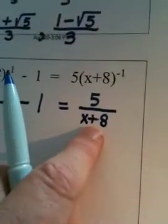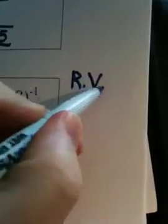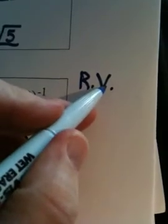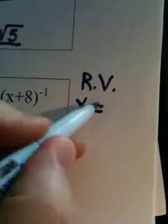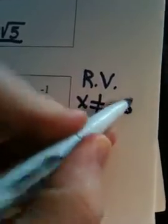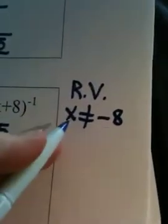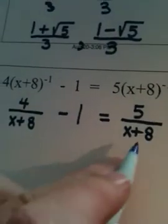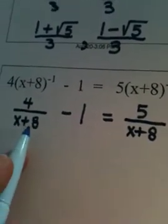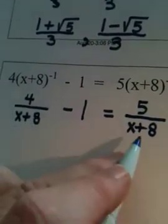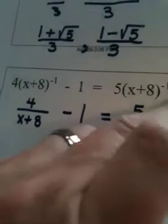If I put the number negative 8 in for x, negative 8 plus 8 would become 0, and that's not allowed — a denominator can't become 0. Likewise, negative 8 cannot be used on the other side either. So I go off to the side of this problem and state what I call restricted values: x cannot equal negative 8. You state restricted values any time you're solving an equation and there are variables in the denominator.